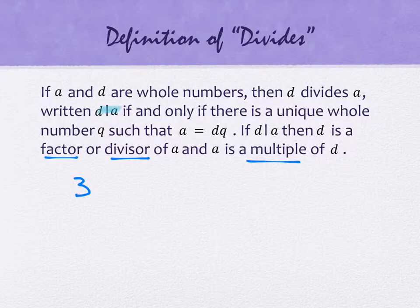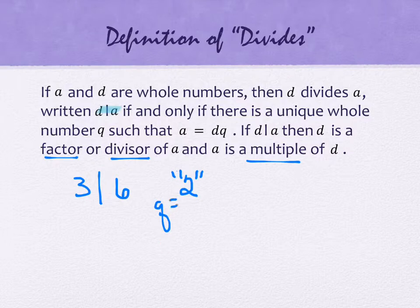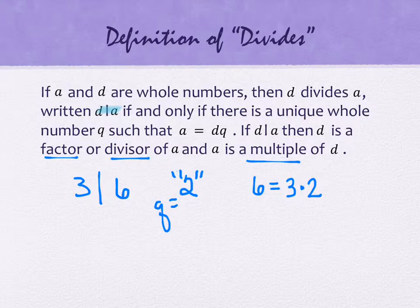Three goes evenly into six. The notation would look like this — we read it as 'three divides six.' It's not a fraction bar; it's sort of the opposite in terms of ordering. The reason that three divides six is because there exists a number Q — here Q equals two — where six equals three times two.